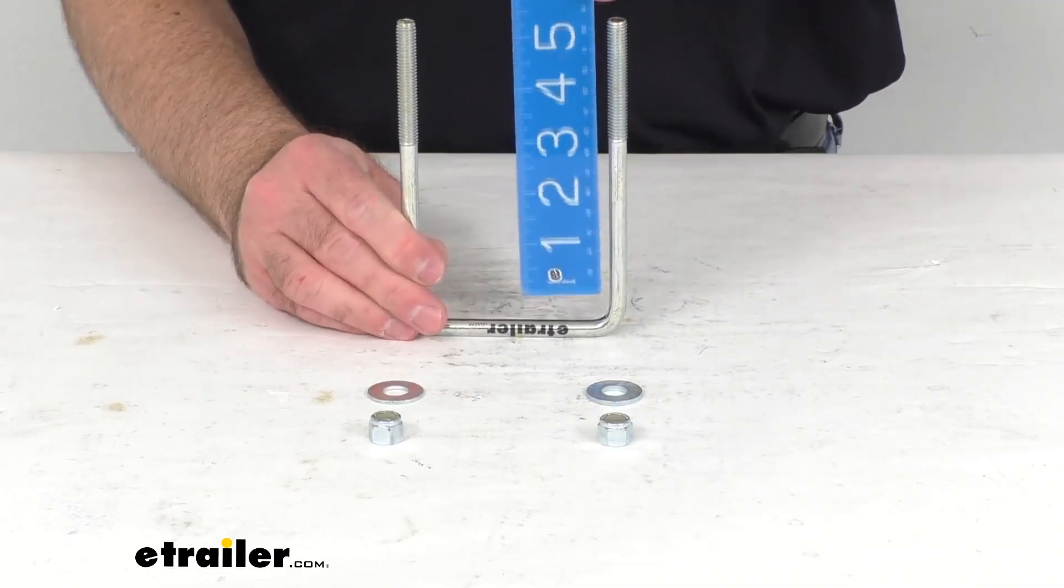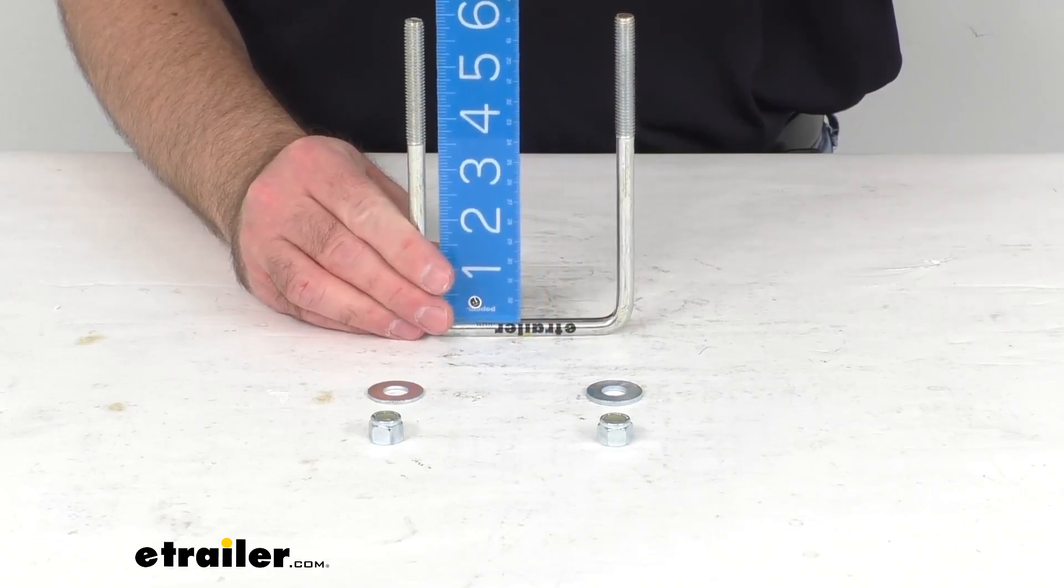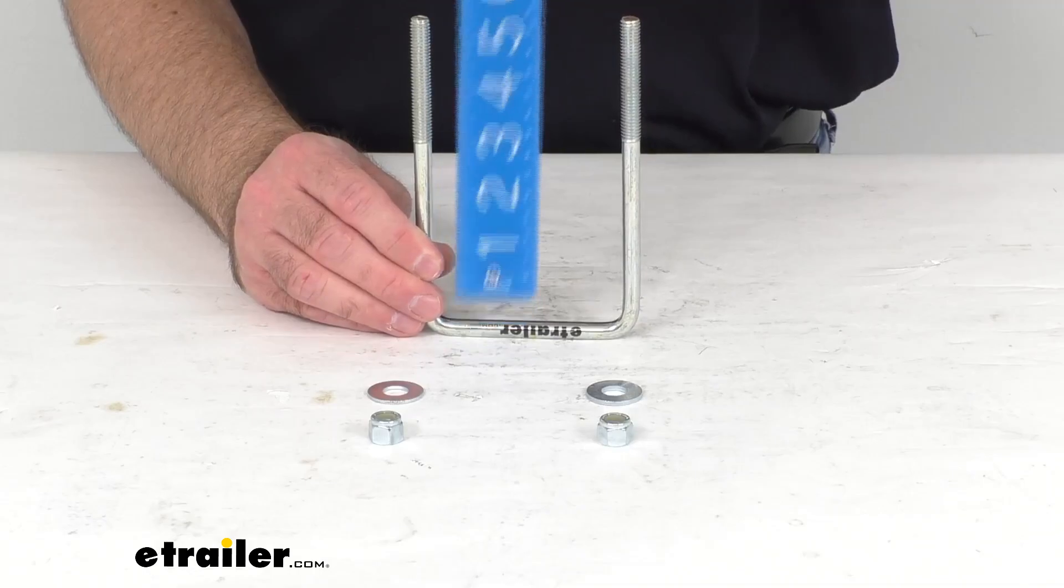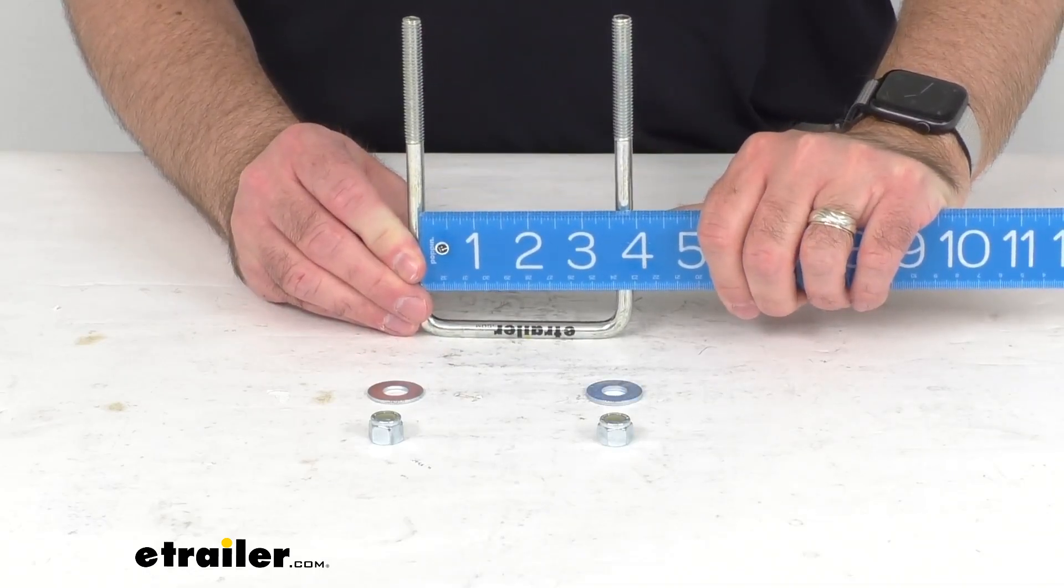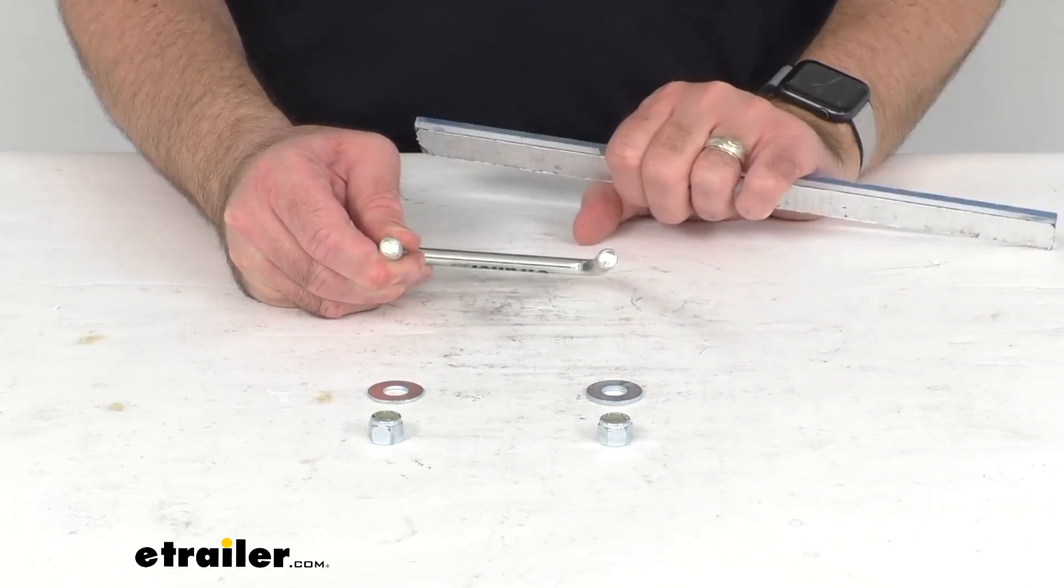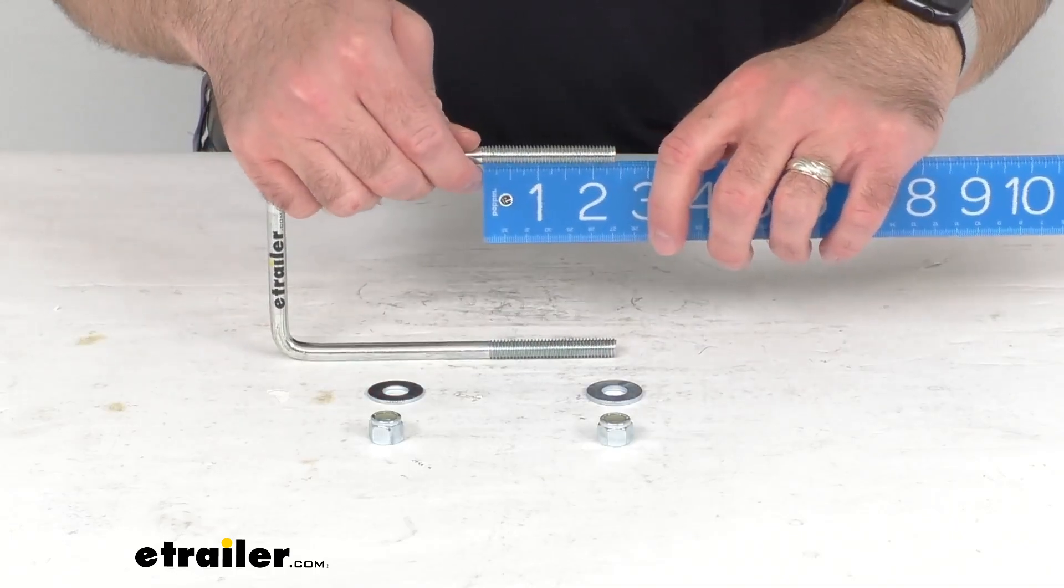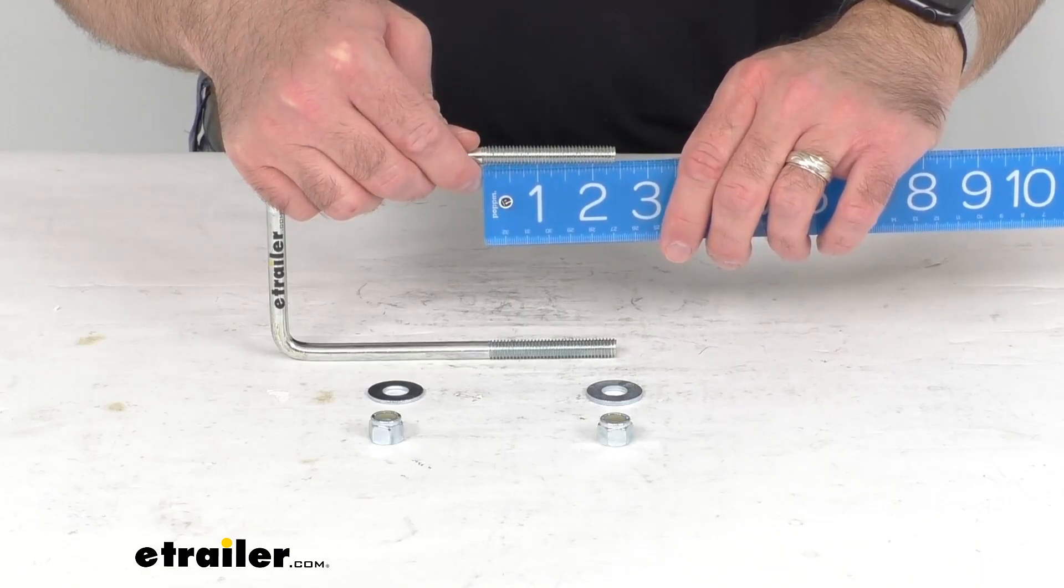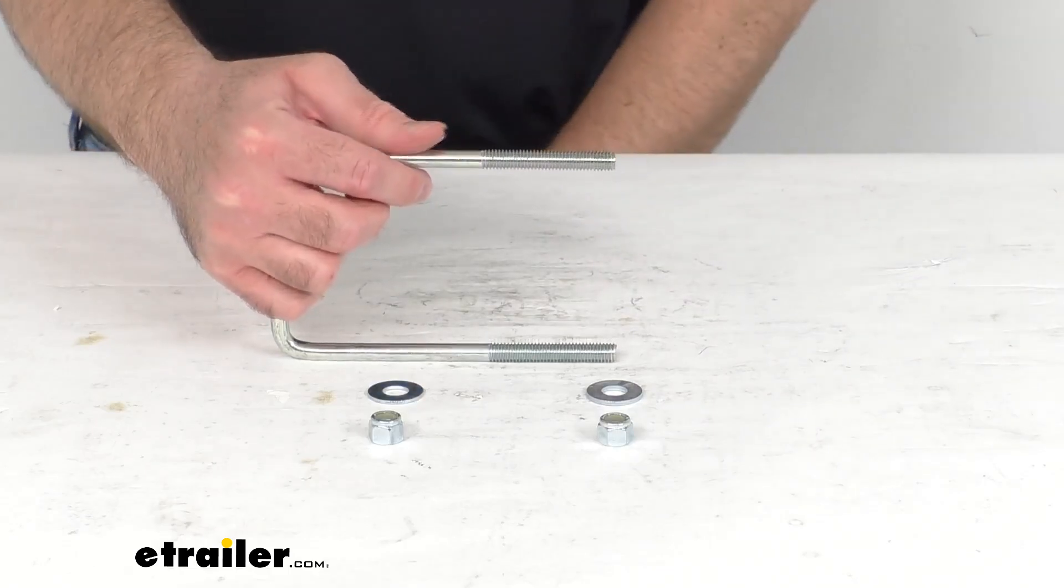I'm going to be measuring the inside length of this U-Bolt and we're sitting right at 6 inches long, and then the inside width we are sitting right at 3.5 inches wide. The diameter is going to be 3/8 of an inch and the threaded section we're sitting right at about 2-1/4 inches and 14 threads per inch.